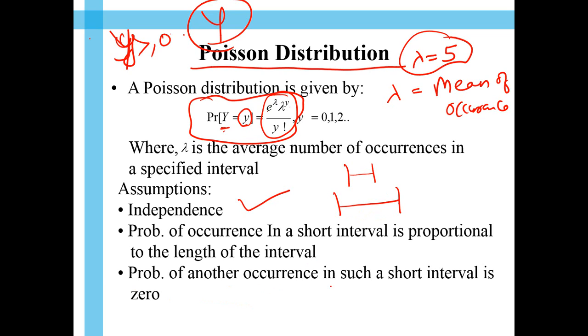So, probability of another occurrence in such a short interval is 0. In a very tiny interval, if something is happening, there is very less chance that something else will also happen. That means, the events do not happen,